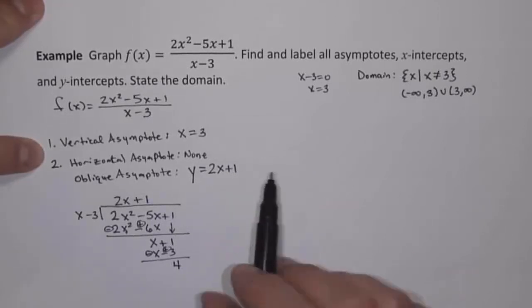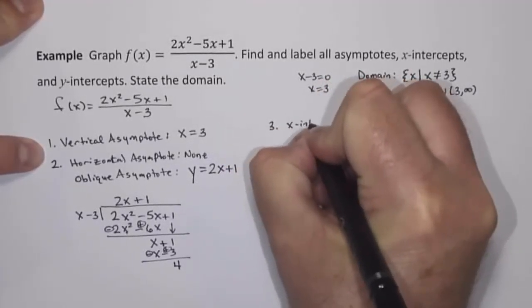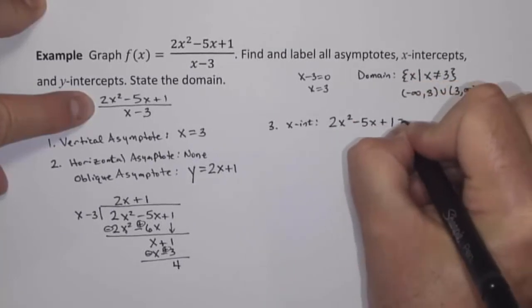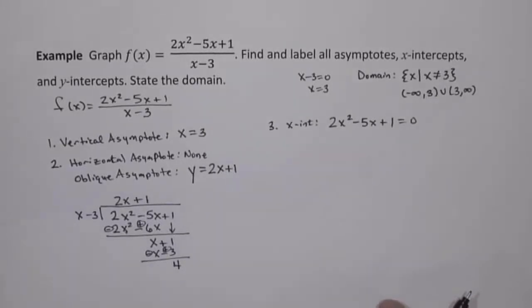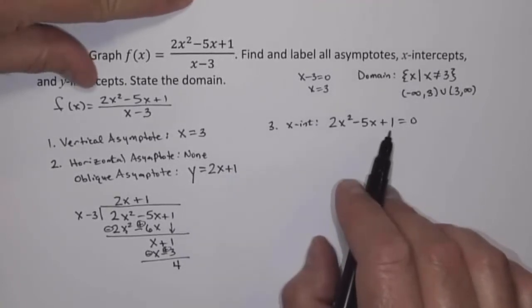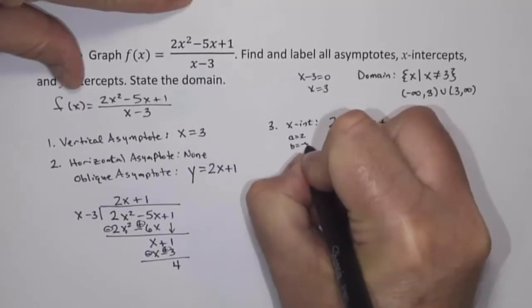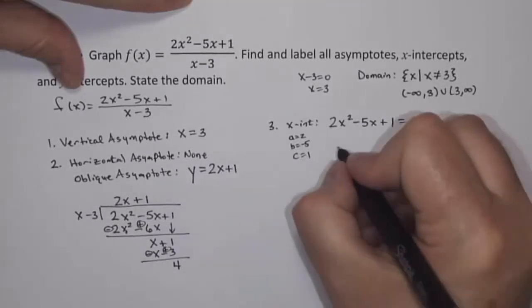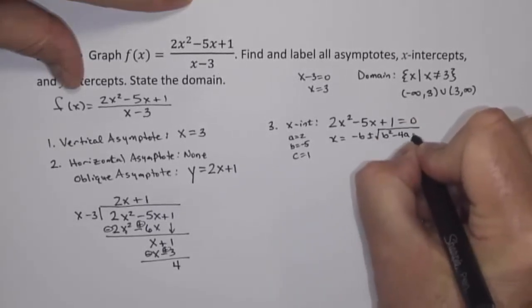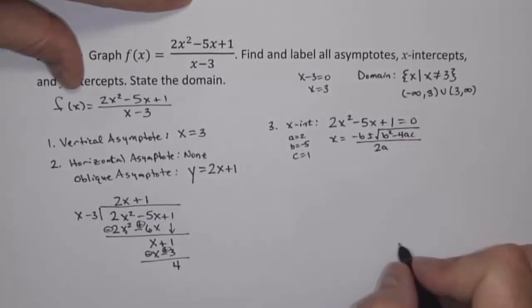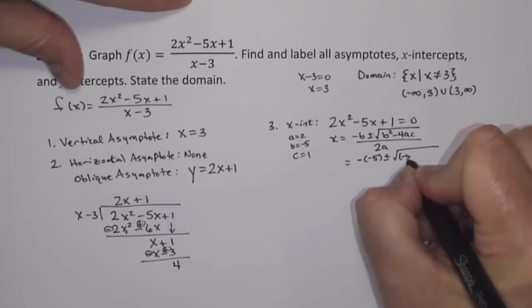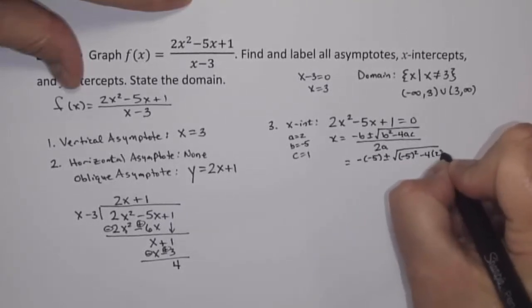Next we want to find the x-intercepts. We can do that by taking the numerator and setting it equal to zero: 2x squared minus 5x plus 1 equals 0. We already discussed that this doesn't factor, so we'll use the quadratic formula. With a equals 2, b equals negative 5, and c equals 1, the quadratic formula gives x equals negative b plus or minus the square root of b squared minus 4ac, all over 2a. That's the negative of negative 5, plus or minus the square root of negative 5 squared minus 4 times 2 times 1.